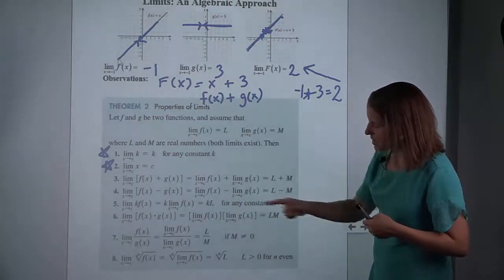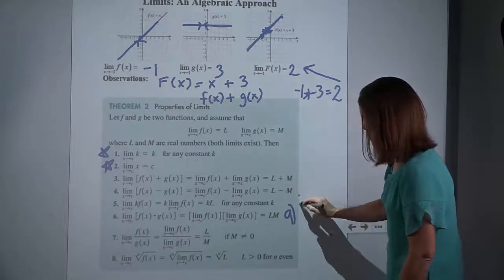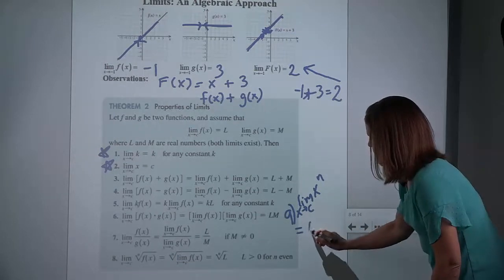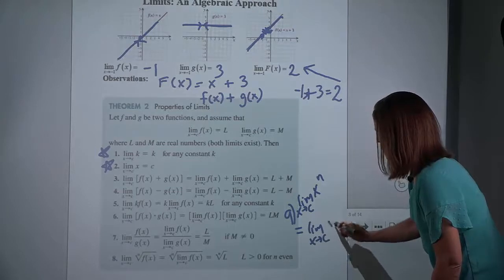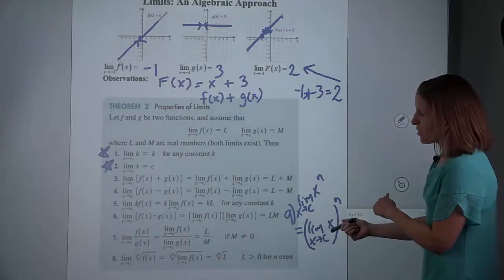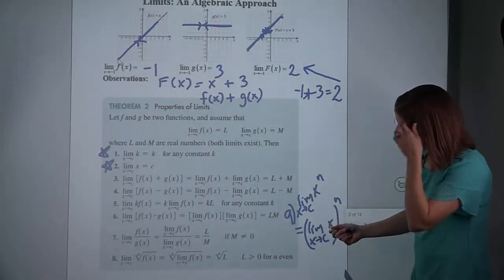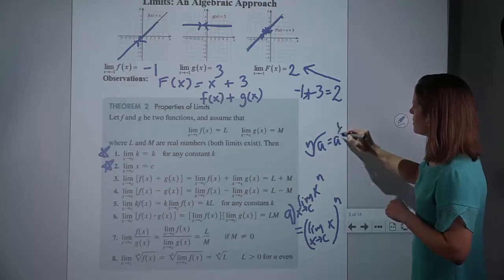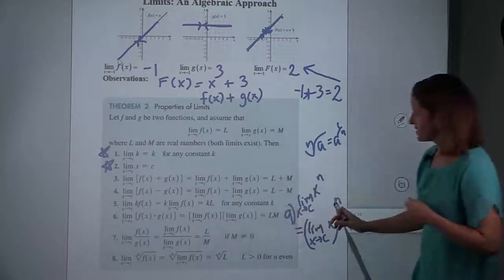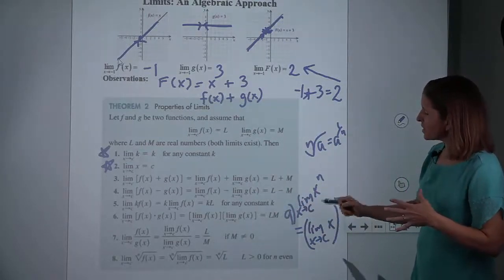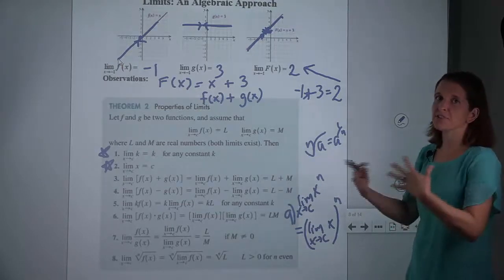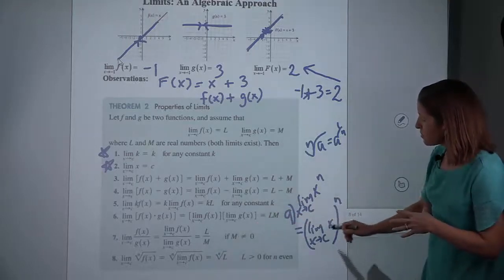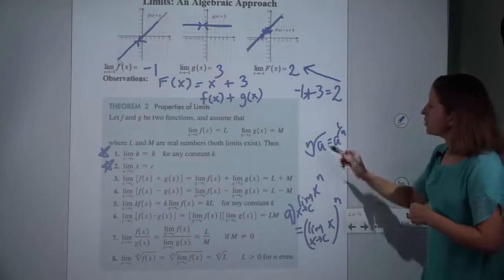The eighth one is talking about a root, and I'd like to add a ninth: if we have the limit of x to the n, then we can take the limit inside and then raise it to the n. Remember that an nth root is a power — it's a one-over power — so that's actually a special case of this rule. It's always just taking the limit of the simpler part and then doing the operation: taking the limits of each little piece and then adding, subtracting, multiplying, dividing, or applying the power or the root.